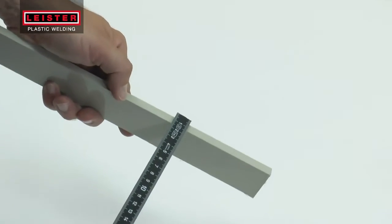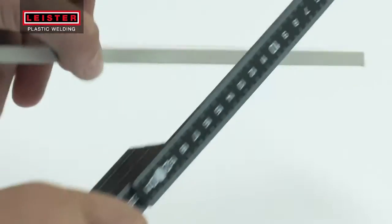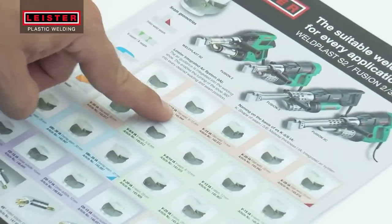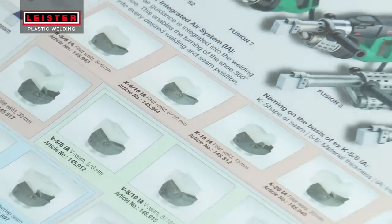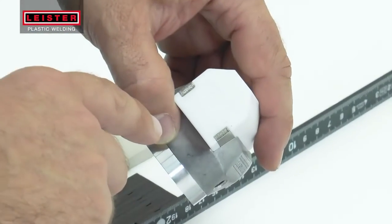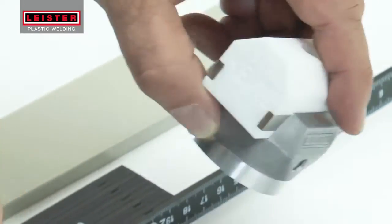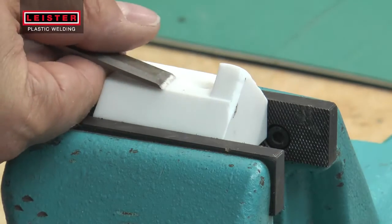Based on the thickness of the material to be welded and the required weld geometry, select the correct welding shoe. The code located on the bottom of the shoe indicates the geometry of the weld and the base material thickness. Alternatively, a shoe profile can also be worked or customized from the supplied blank into the desired shape.